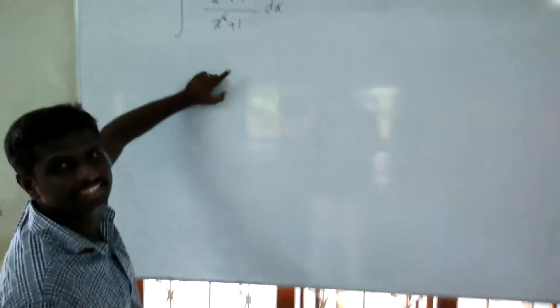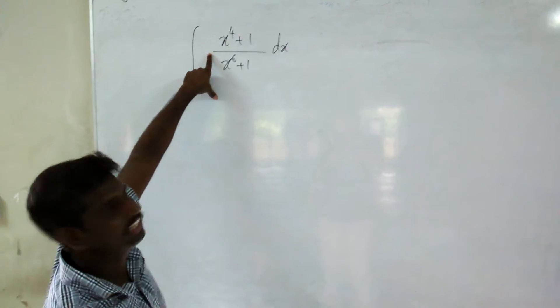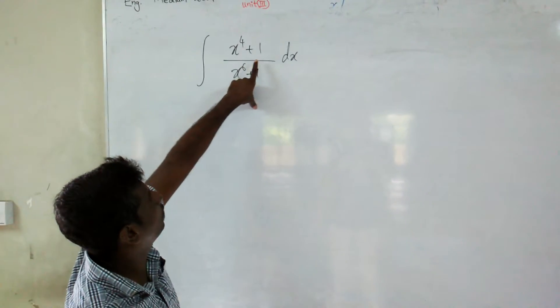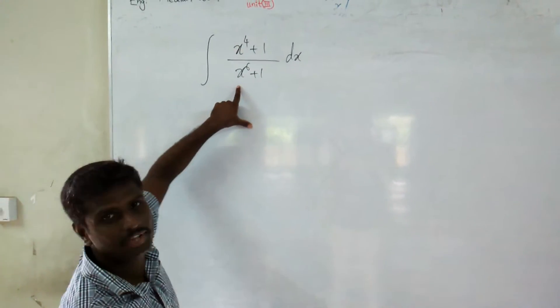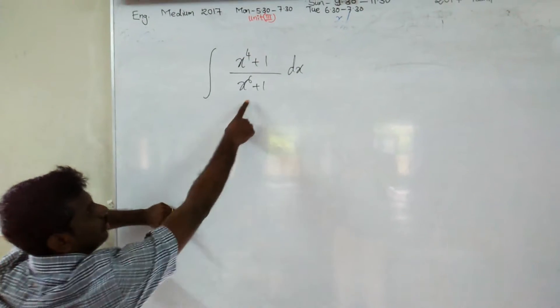Now we are going to do the 2015 Royal College integration question. The question is: x to the power 4 plus 1 over x squared plus x to the power 6 plus 1.